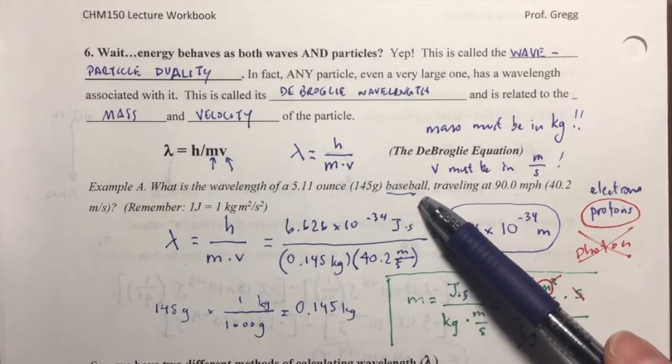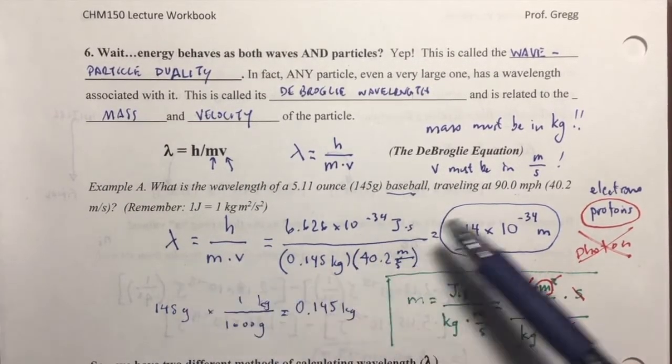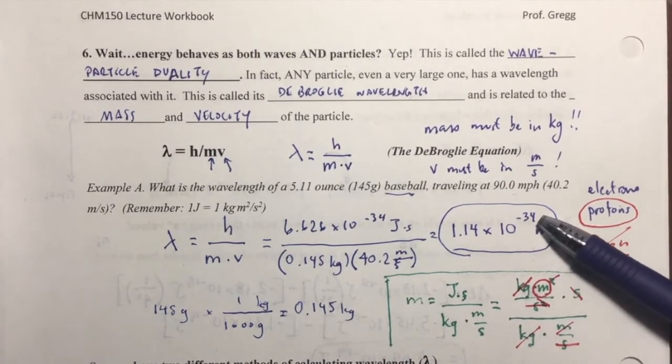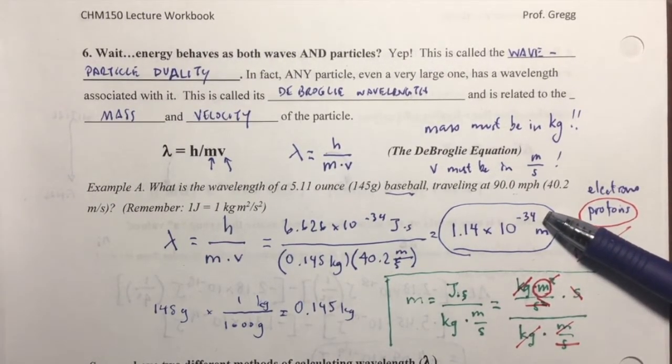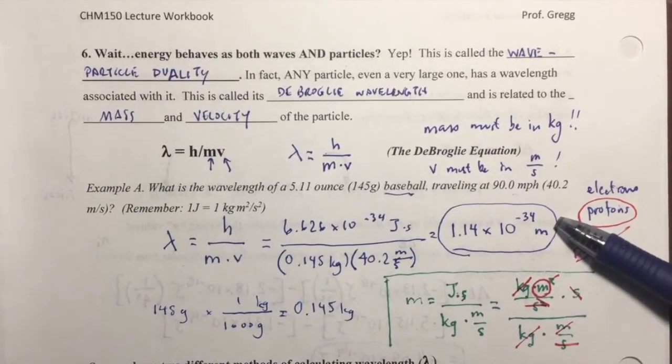For macroscopic large enough particles that you can see them, the de Broglie equation gives us a wavelength, a de Broglie wavelength, that is very, very small, and so it's so infinitesimally small that it's negligible. We can ignore it.